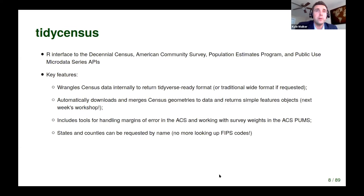TidyCensus also includes tools for handling margin of error — we'll talk about that more in hour two — and working with survey weights in the PUMS data. One of the main reasons I started writing R packages is because I could never remember FIPS codes for states and counties and always had to look them up. So I thought, I might as well write code that lets me just type in the name of the state or county and never have to remember that again — and that's something TidyCensus provides.